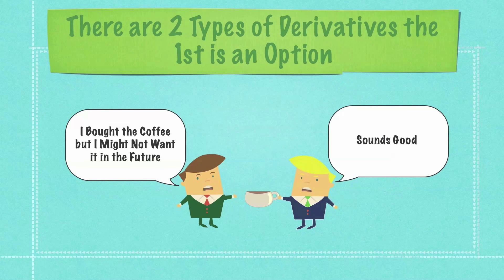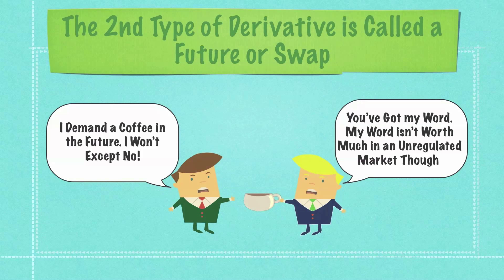There are two types of derivatives. The first is the option, which simply says that in the future, the purchaser of the derivative has the option to buy the cup of coffee but will not be forced to do it if they don't want to. Then you have futures or swaps — they are identical, the same exact thing. Under a future or swap derivative, these two parties will be forced at some point in time or when some event occurs to make a transaction. The only problem is if these derivatives are handled in an unregulated market, there is no guarantee that the other side will actually fulfill the contract.